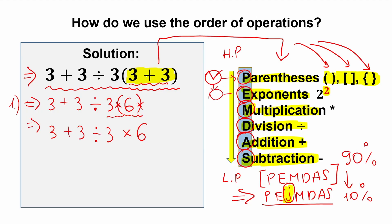After parentheses, the next step is exponents. Scanning the expression, we don't have anything like 3 squared or 3 cubed, so we can skip and erase this step. The next step is the multiplication and division group. We scan and find division here and multiplication here. We must do them in strict order from left to right — whichever sign appears first from left to right.